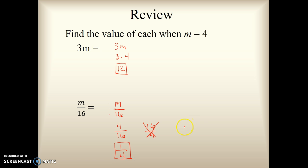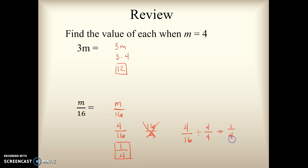Just a little reminder: when we are finding an equivalent fraction, we either multiply or divide by one. What I'm doing is dividing by the greatest common factor, which is four, and that equals one-fourth. We divide the numerators and we divide the denominators.